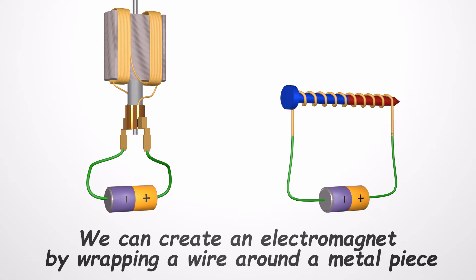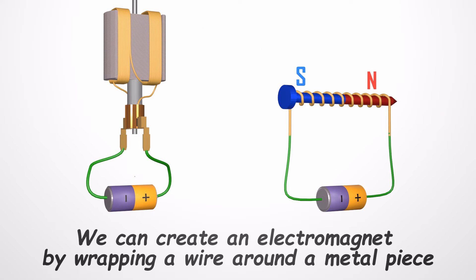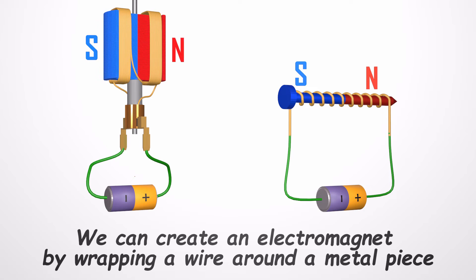We can make an electromagnet by wrapping a copper wire around a metal piece such as an iron nail. In a motor, the armature windings are wrapped around the metal armature core, so when we supply the power, the armature becomes an electromagnet.